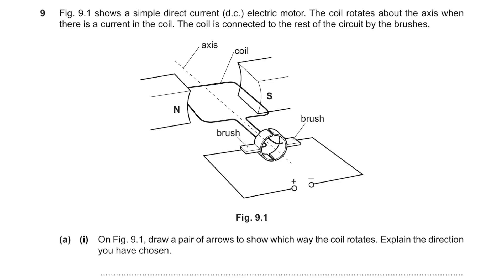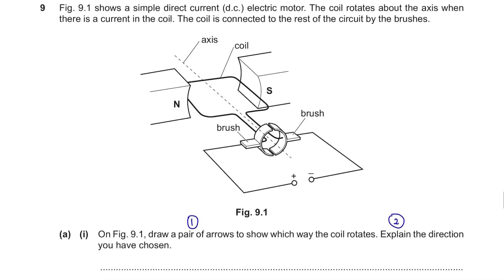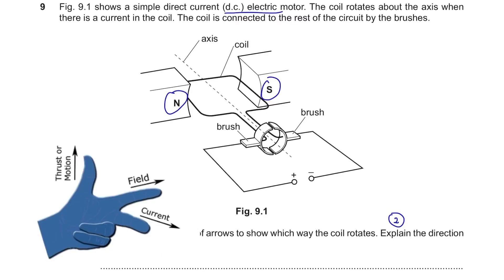Question 9. Figure 9.1 shows a simple direct current DC electric motor. The coil rotates about the axis when there is a current in the coil. Part A: Draw a pair of arrows to show which way the coil rotates, and explain the direction chosen. You have to use Fleming's left-hand rule. If you see a DC motor with these magnets, you should automatically know to use Fleming's left-hand rule. The direction of the magnetic field — your second finger points from the north pole to the south pole, and current flows from the positive to the negative.